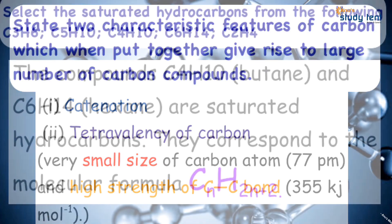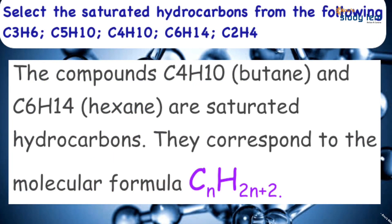Saturated hydrocarbons — alkanes — have the formula CnH2n+2 and contain only single bonds. Alkenes have double bonds and are unsaturated compounds with formula CnH2n. Alkynes have triple bonds and are unsaturated compounds with formula CnH2n-2.